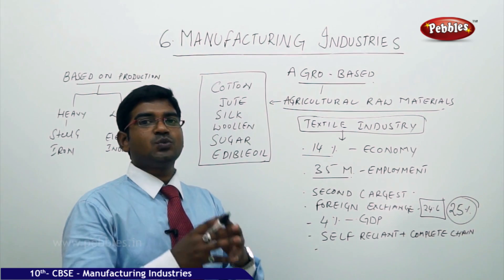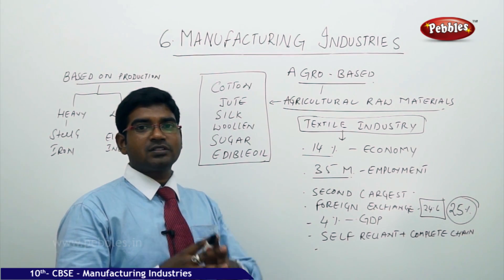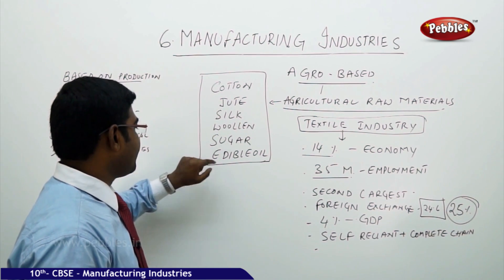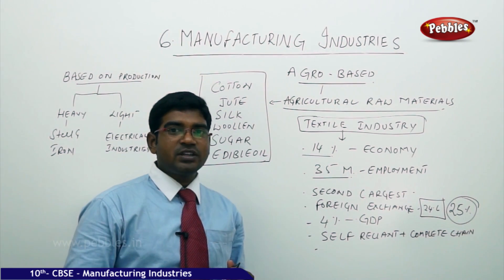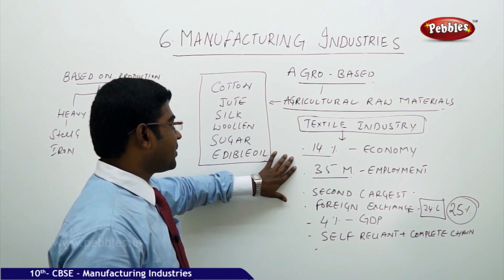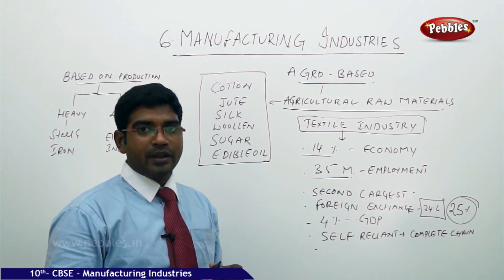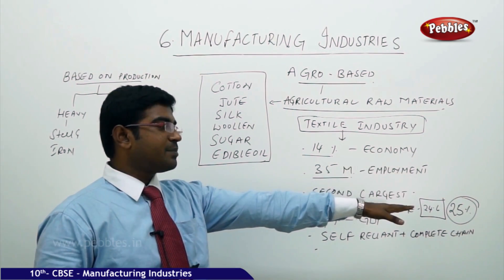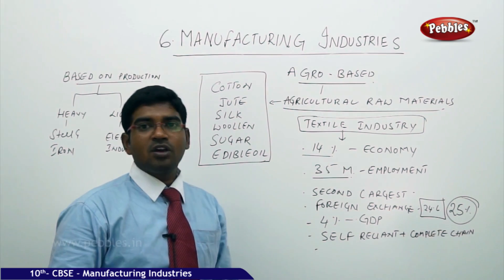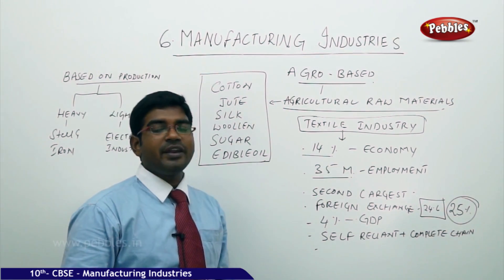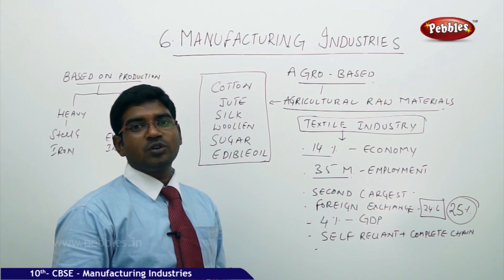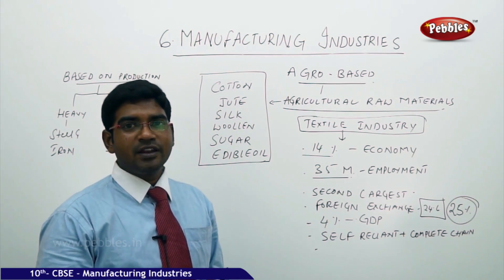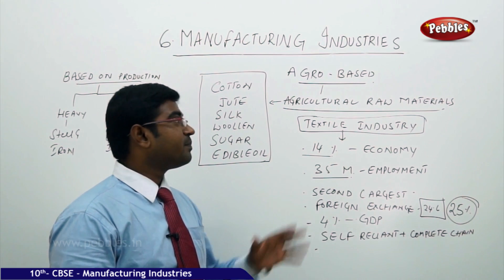To summarize, agro-based industries are those which derive their raw materials from agriculture. Examples include cotton, jute, silk, woolen, sugar, and edible oils. The textile industry's significance in the Indian context: it contributes 14 percent to industrial production, employs 35 million people directly, is the second largest industry after agriculture, contributes 25 percent of India's foreign exchange, 4 percent of GDP, and is the only self-reliant industry that completes the entire chain without linking to other industries.